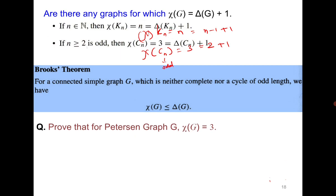We use Brooks' theorem to confirm that the chromatic number of the Petersen graph is 3. Since all vertices have degree 3, Δ = 3, so χ ≤ 3. The Petersen graph is not a null graph (so χ ≠ 1), and it contains an odd cycle of length 5, so it is not bipartite (thus χ ≠ 2). Therefore χ = 3. In the next class we will see how to find the chromatic number for planar graphs.